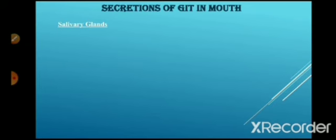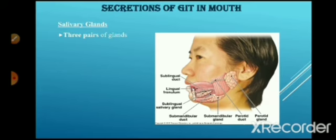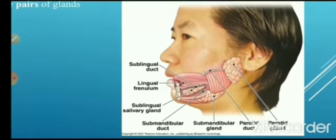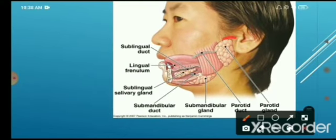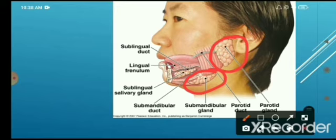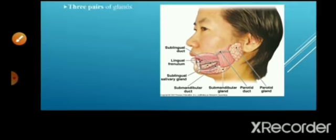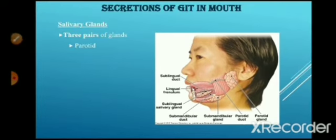Now, secretion of GIT in the mouth. First of all, the salivary gland. Three pairs of glands are present, as we can see in the photograph. There is a presence of three pairs of salivary glands: first, the parotid gland; second, the submandibular gland; and third, the sublingual gland. These three pairs of salivary glands are present in the oral cavity.